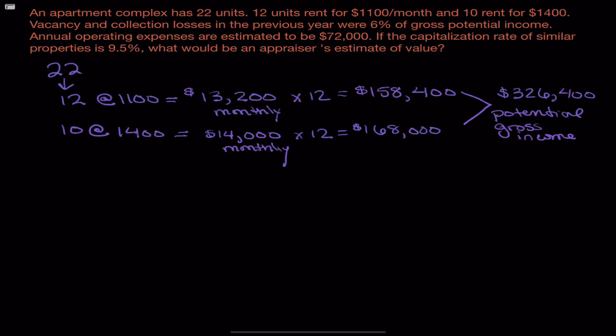So now that we have the potential gross income, we've got to take out the vacancy and collection losses. That potential gross income of $326,400, we're not going to see 6% of this. Now personally, I would just put this in the calculator as $326,400 times 94%. We know we're not getting 100% of that $326,400. We're only getting 94%. And that math tells us that we would be receiving $306,816.